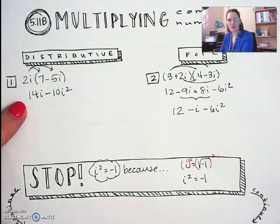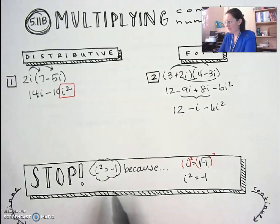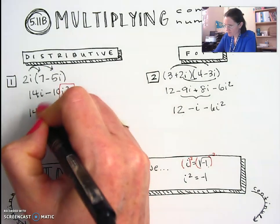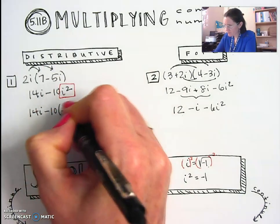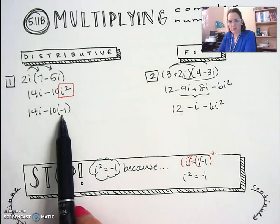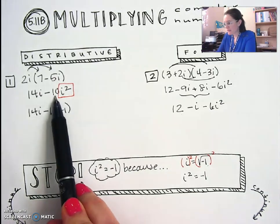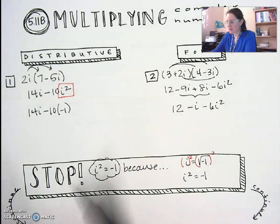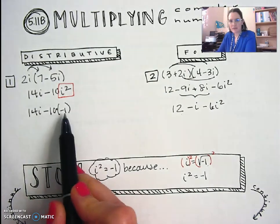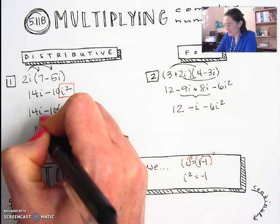So going back to this answer in number 1, I have an i squared right here, and I'm going to replace it with a negative 1. Now this kind of looks like I have negative 10 minus 1, like it's a subtraction, but it is not. In the step before, it was negative 10 times i squared. So this is a times as well. So I have negative 10 times negative 1, which is positive 10, and then I have 14i.